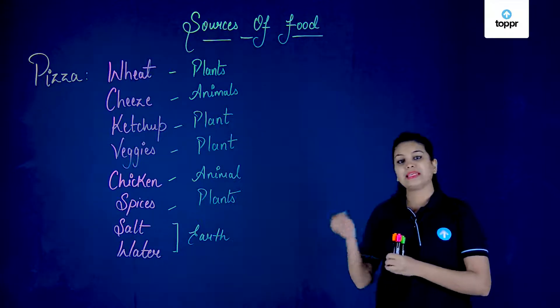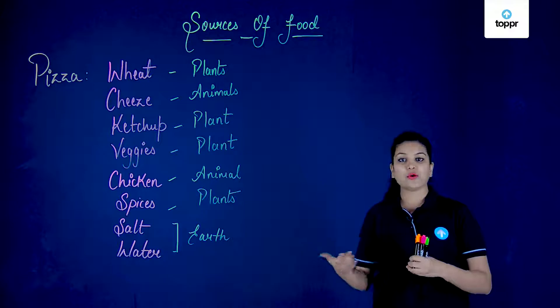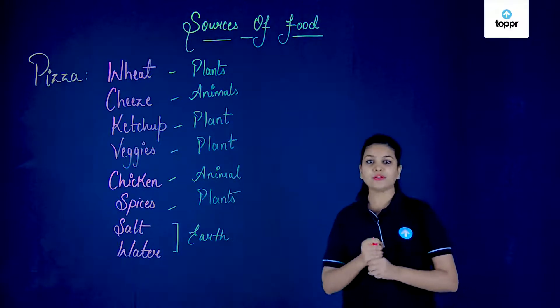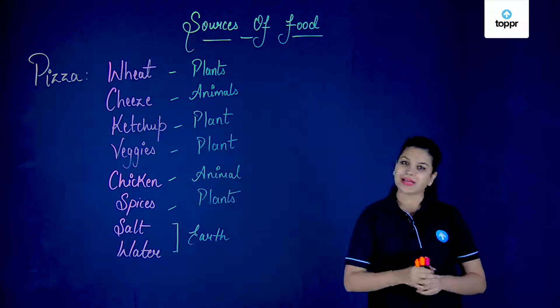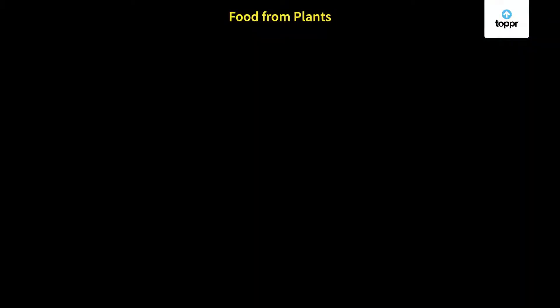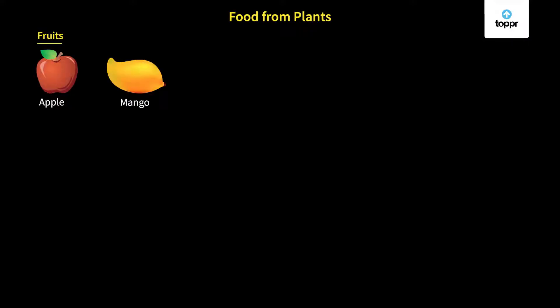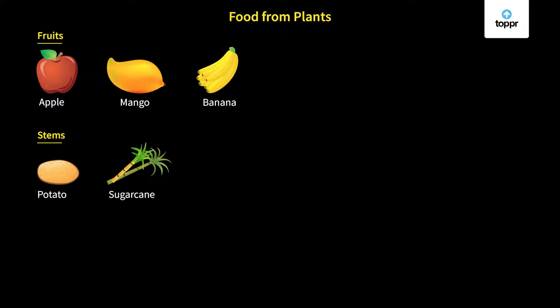Animals, on the other hand, eat these plants and give us a number of animal products. Now let's have a look at the different types of products we can get from plants and animals. In plants, the very yummy things we eat are the fruits — such as apple, mango, banana, and many other items. Similarly, from the stem we obtain potato, sugarcane, ginger, and many other items.